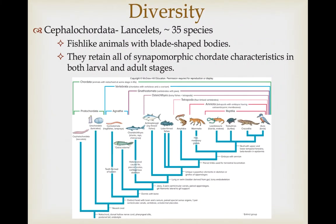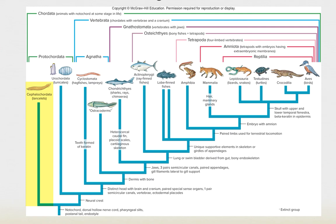Of the two lineages we're going to cover today, the first is the cephalochordata, commonly referred to as the lancelets — about 35 species. They're fish-like animals that are blade-shaped in their body form, which is why they're called the lancelets. Adults retain all five of these synapomorphic chordate characteristics in both the larval and adult stages.